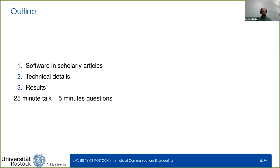A brief outline of the talk: it will be structured in three main parts. First I will talk about how software is mentioned in scholarly articles and all relevant information. Then about the technical details of how our method for automatic extraction works. And finally I will talk about the results of the analysis we performed. The talk will be about 25 minutes, leaving five minutes for questions.